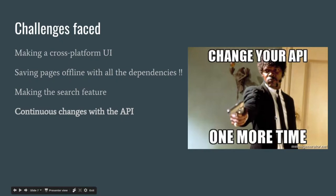The challenges I faced with the prototype were: making a cross-platform UI — as you've seen, the UI was really bad and not usable even for a desktop system, let alone mobile. Saving pages offline with all dependencies was also a challenge, since the WikiToLearn API didn't provide the CSS or JavaScript needed to display pages. Next was making a search feature — instead of typing exact page names, it needed to work like a Google search. There were also internal changes in our organization, since WikiToLearn was still in early stages, there were frequent API changes and I had to redo some work to keep the client compatible.